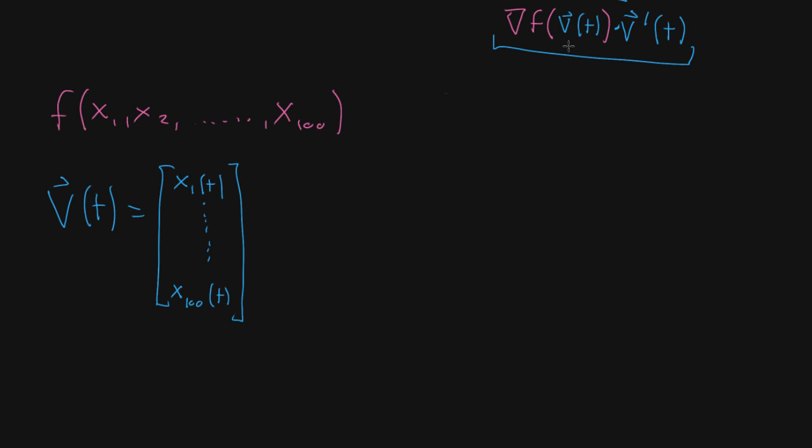So in the last video, I introduced the vector form of the multivariable chain rule. And just to remind ourselves, I'm saying you have some kind of function f, and in this case I said it comes from a 100-dimensional space.